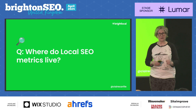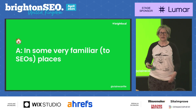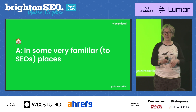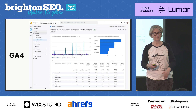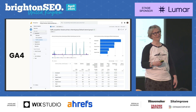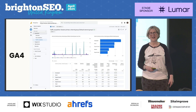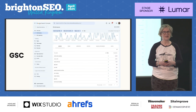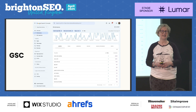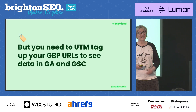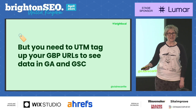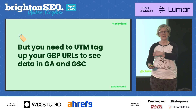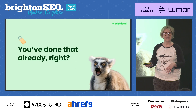Let's think about where those local SEO metrics live. As SEOs, they appear in some very familiar places: Google Analytics 4 and Google Search Console. But to see your data in those places, you need to make sure you UTM tag all your URLs that link away from your Google Business Profile to your site. There is a new version of a Whiteboard Friday coming out in May, and I have updated a post on my website with a template for UTM tagging — just drop your URLs in and it will give you the UTM tags.